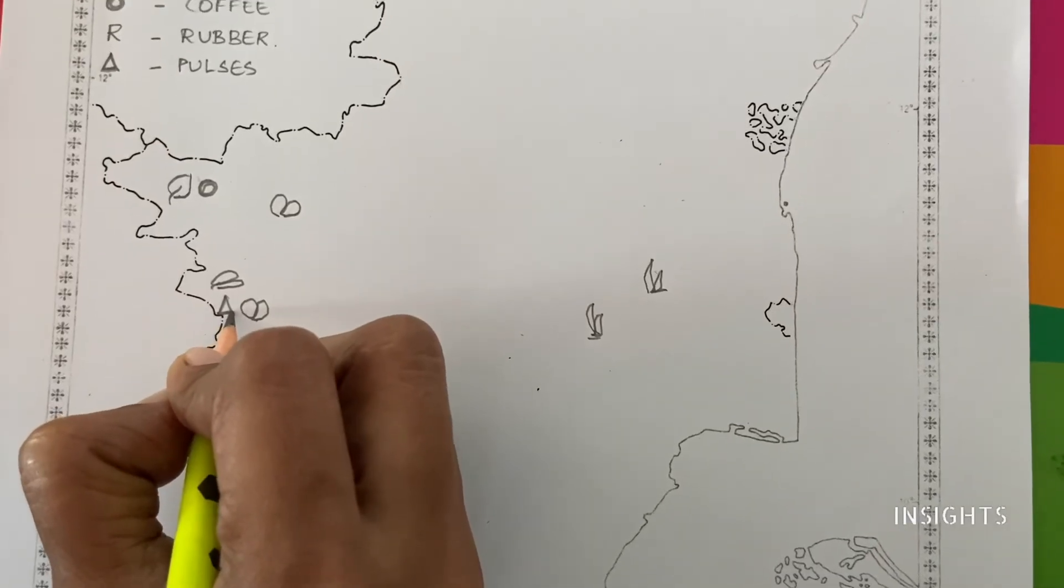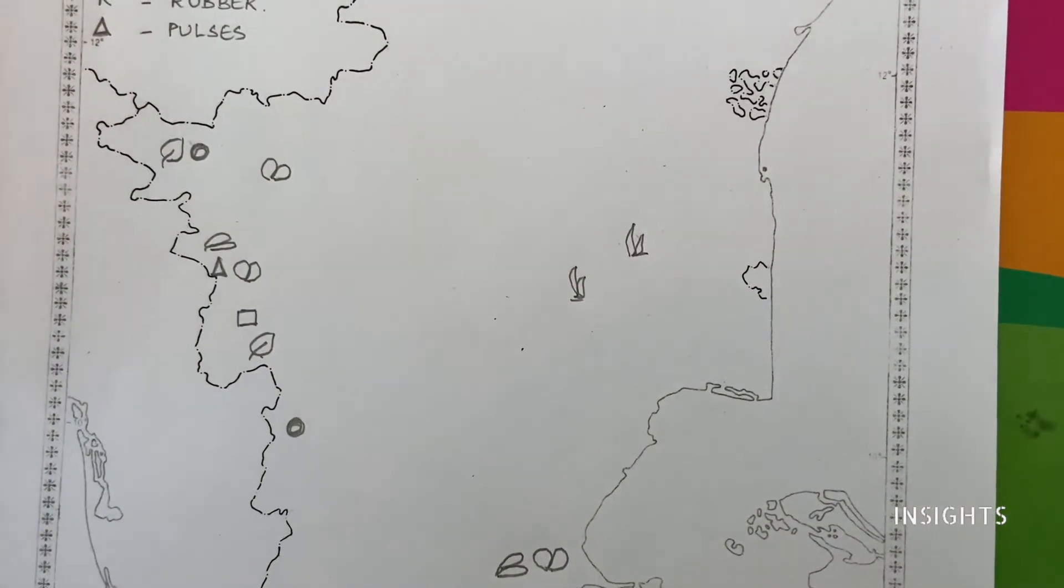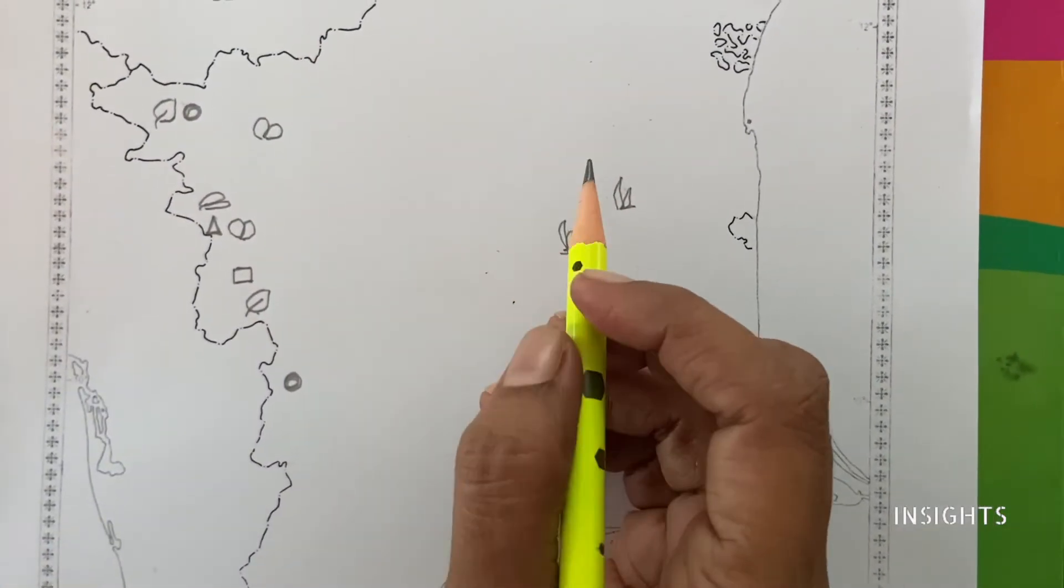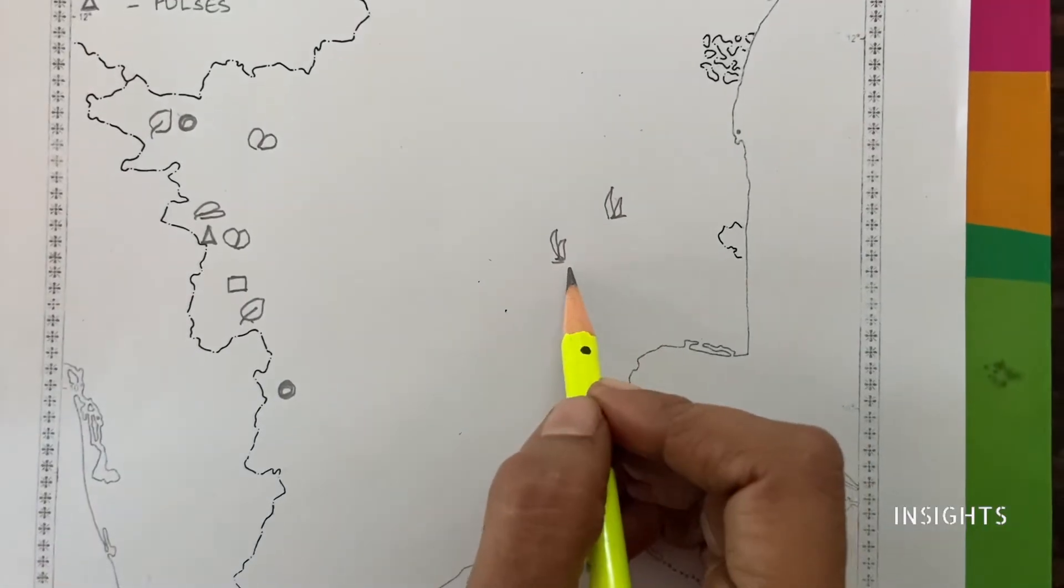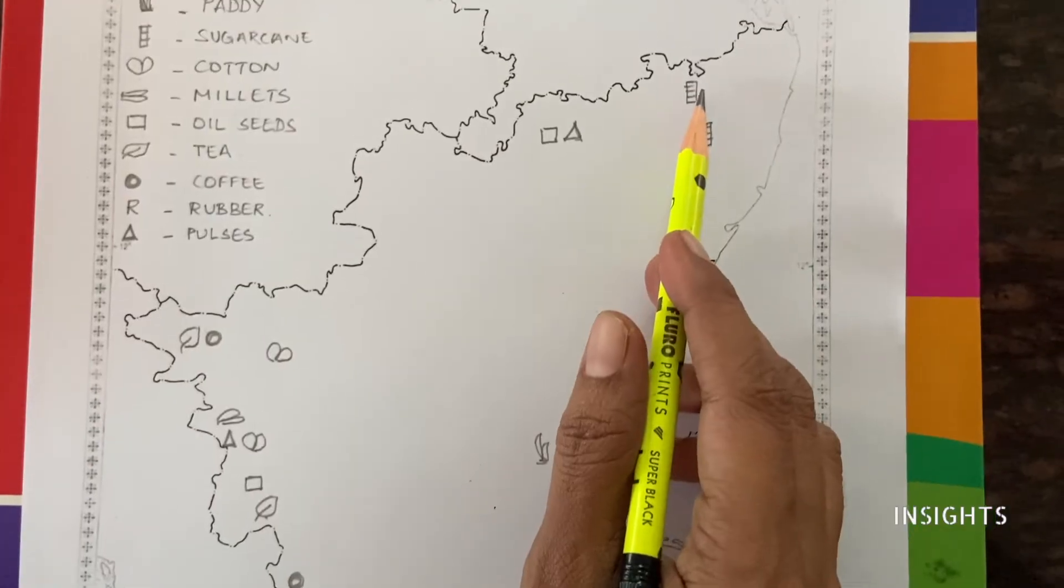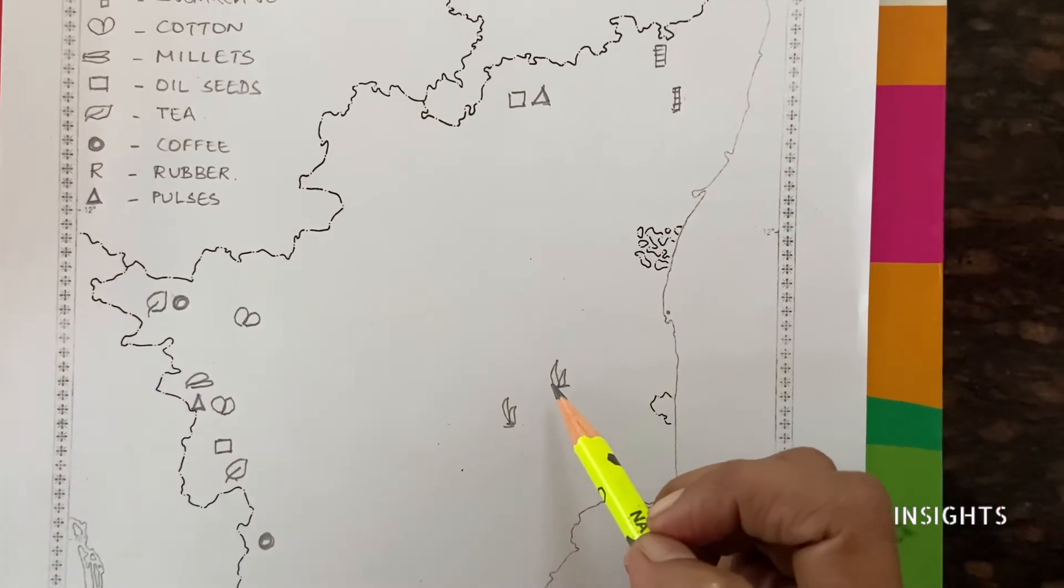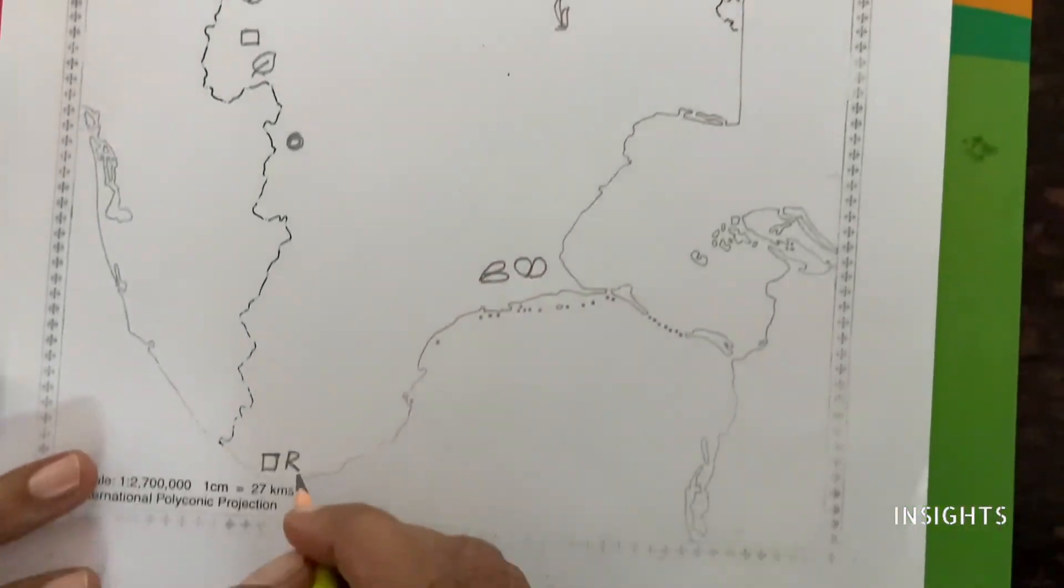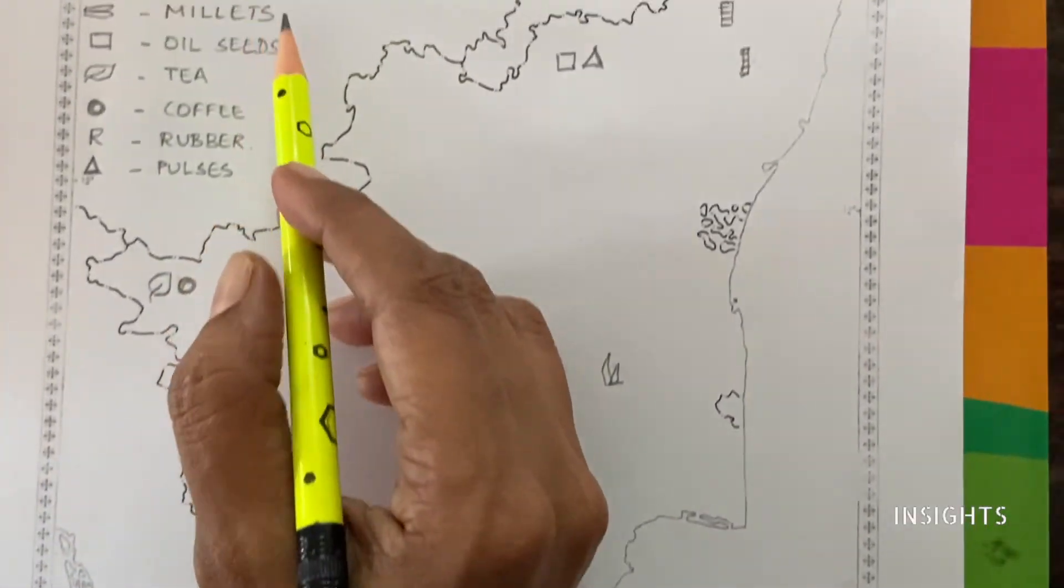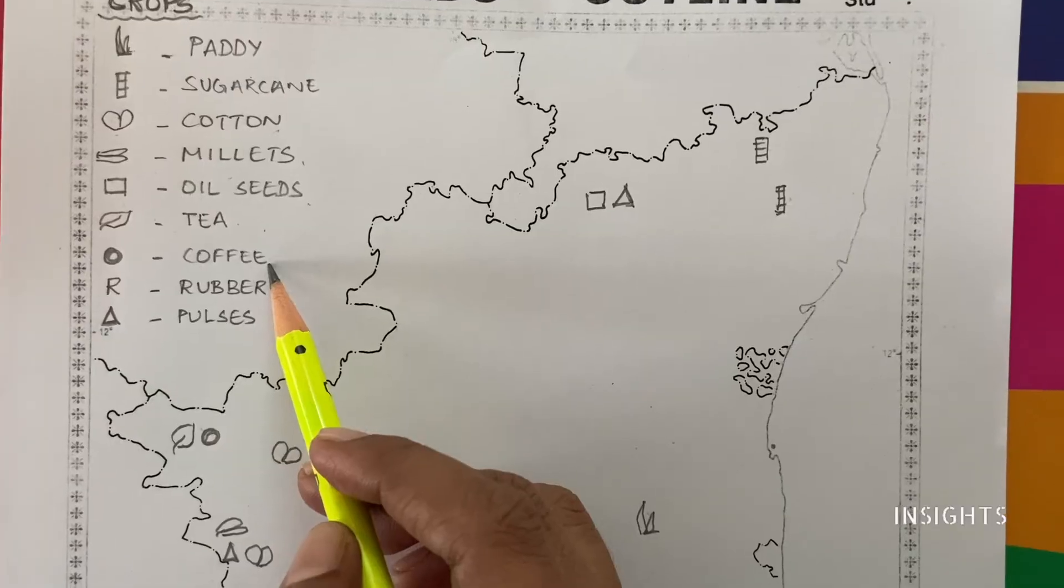So as students, it will be difficult for you to remember all the things. So if you look at these crops, except for paddy, paddy is very important. First, sugar cane in the end. Okay. So these two things, you remember that it is available here. And the third one which is very unique, that is Kanyakumari has rubber. Apart from that, cotton, millets, oil seeds, tea, coffee, pulses.